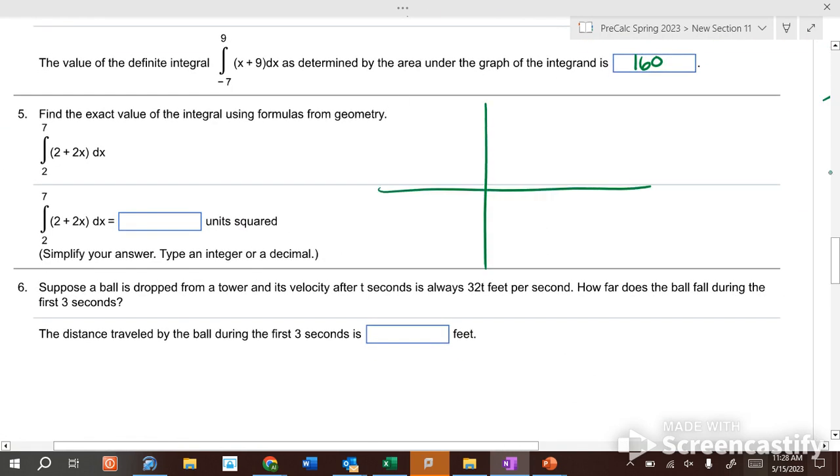For this one, 2x plus two, what's the slope? Two. What's the y-intercept? Two. So it kind of looks like this. How far is it between the two parallel lines? Five. What's the height of the first line if we stick two in there? Six. What's the height of the second line if we stick seven in there? 16. So six plus 16 is 22, half of that is 11 times five is 55.